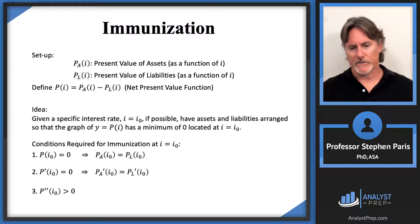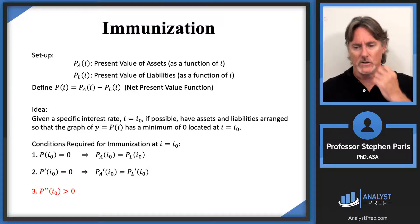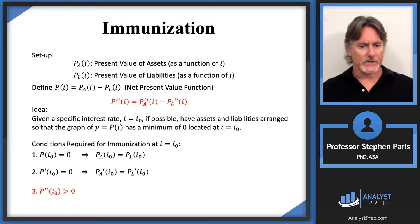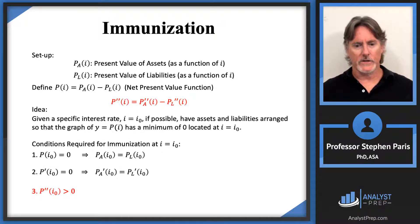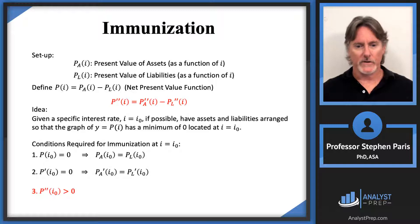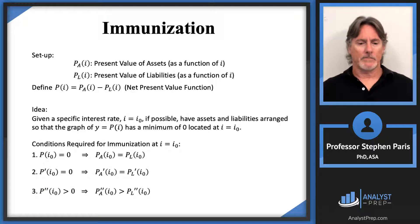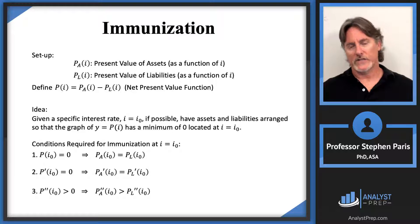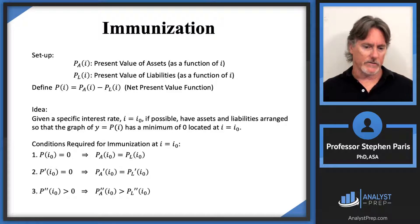Similarly, the third condition on the second derivative: the second derivative of the net present value function equals the second derivative of the asset PV minus the second derivative of the liability PV. We require that the second derivative of the present value of assets is greater than the second derivative of the present value of liabilities at I-naught.